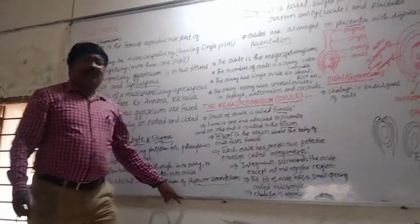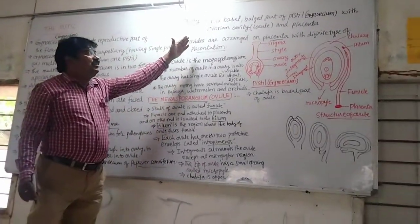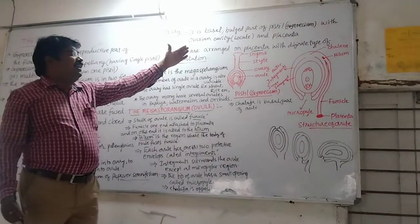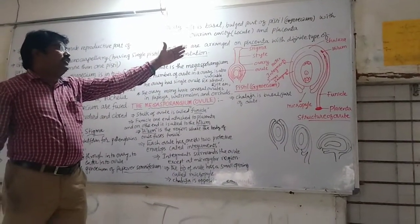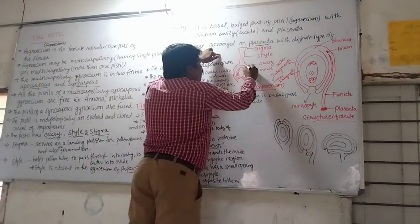The ovary, it is basal, with styles like basil style, parietal style, axile style, free central. The ovary has an ovarian cavity, this is the ovarian cavity.